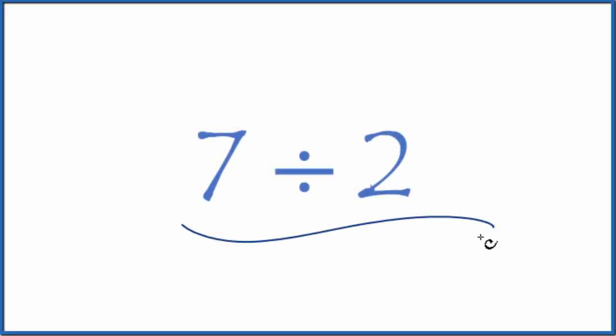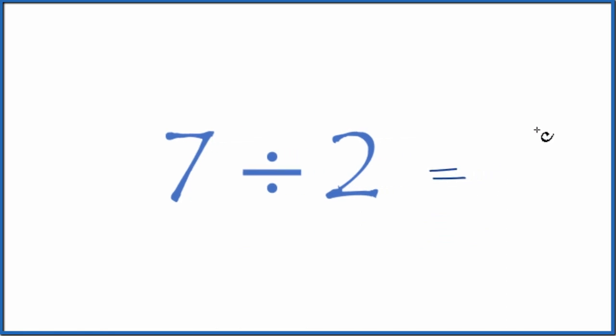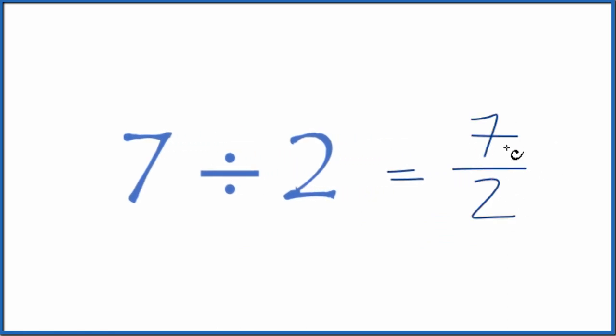If you're asked to divide 7 by 2, here's how you do it. You could consider this a fraction. 7 divided by 2, that's 7 over 2, 7 halves.